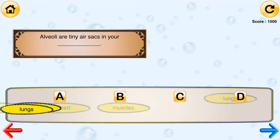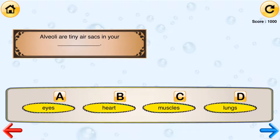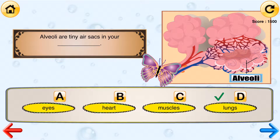Alveoli are tiny air sacs in your blank. Eyes, heart, muscles, lungs. Lungs.